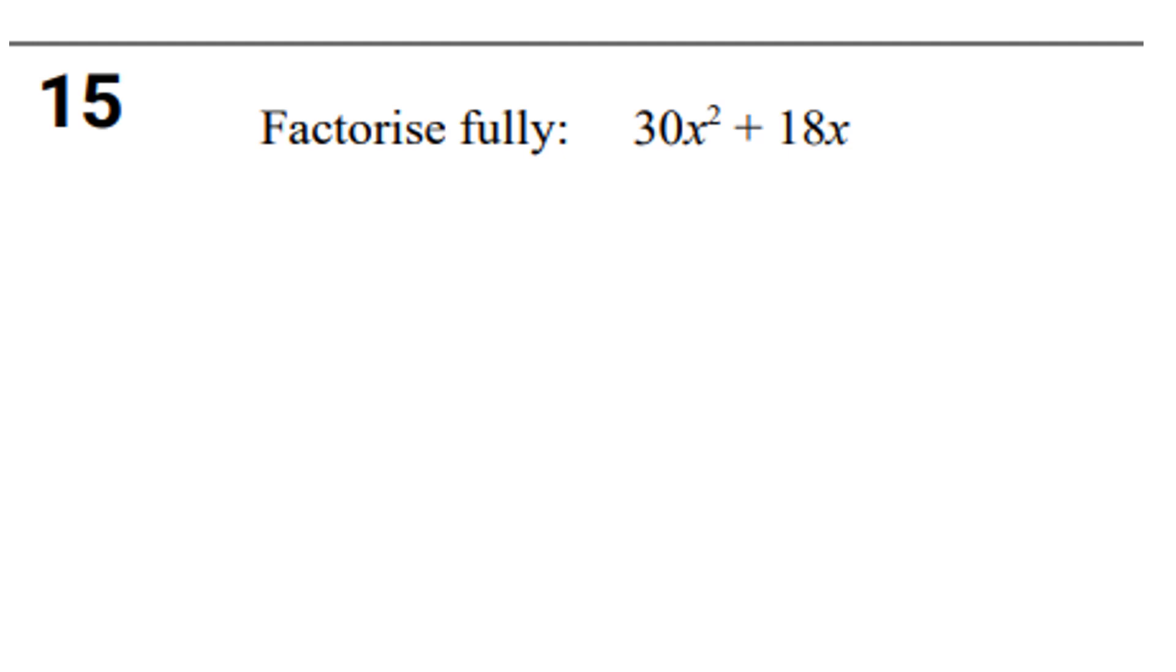What's the highest common factor of 30 and 18? That would be 6. And the highest common factor of x² and x is just x, so it's 6x outside the bracket.